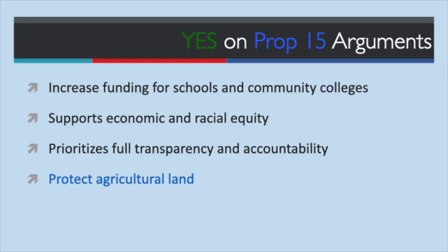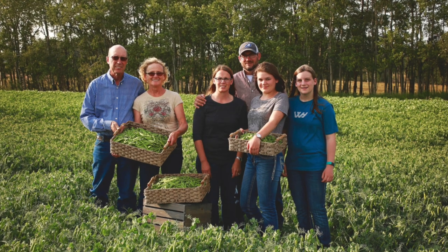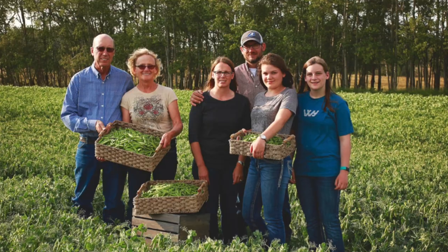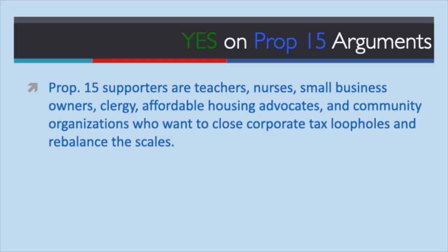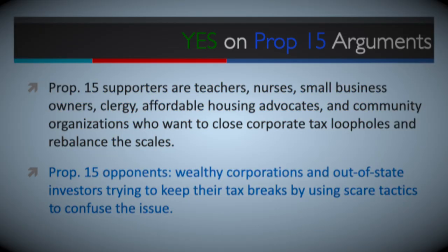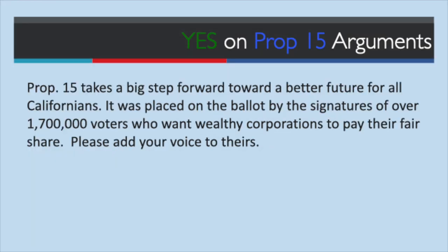Prop 15 prioritizes full transparency and accountability by requiring schools and local governments to publicly disclose new revenues they receive and how they are spent. It makes no change to existing laws affecting the taxation or preservation of agricultural land. Supporters include teachers, nurses, business owners, clergy, affordable housing advocates, and community organizations who want to close corporate tax loopholes. Prop 15 was placed on the ballot by over 1,700,000 voters who want wealthy corporations to pay their fair share. Vote yes on Prop 15.